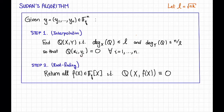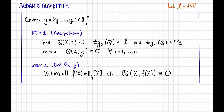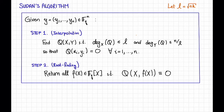Notice that the difference between this and the bivariate version for Berlekamp-Welch is that the structure of q can be much more lax — it's anything with x-degree and y-degree not too large. The vanishing condition is exactly the same, though. The second step, called the root-finding step, is to return all f in F_q[x] such that q(x, f(x)) is identically equal to zero.